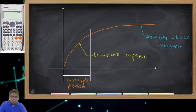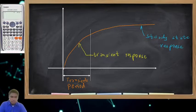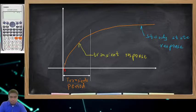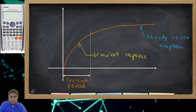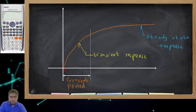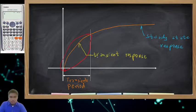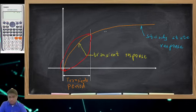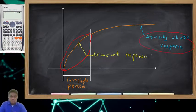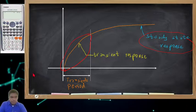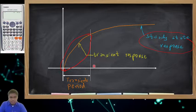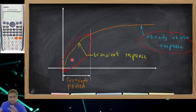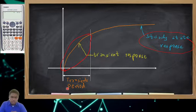We have here the graph. At time zero, we switch on. As you can see, our response is getting bigger — it is increasing. Then at this point it will start to plateau or become flat. This part is what we call the transient response, and the part of the graph that is going steady is what we call the steady state response. The time from zero until our response starts to plateau is the transient period.